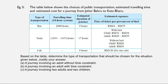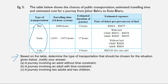Now we look at example three. The table shows the choices of public transportation, estimated travelling time, and estimated cost for a journey from Johor Bahru to Kota Bahru. There are three types of transportation: bus, train, and cab. The duration is 9 hours for bus, 17 hours for train, and 9 hours for cab, with the prices of the tickets given. Based on the table, determine the type of transportation that should be chosen for the situation given below and justify your answer.